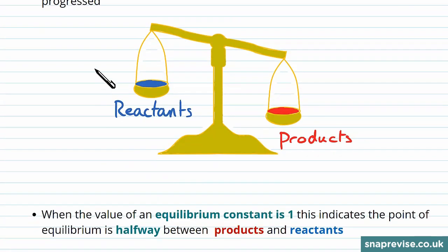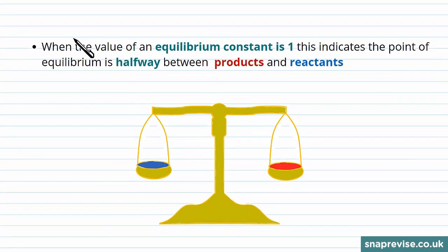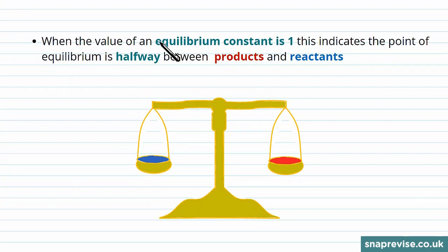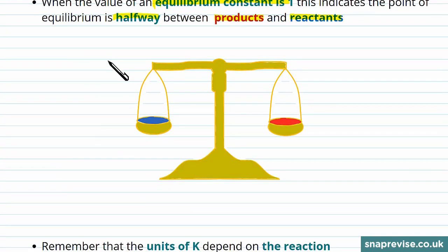If we had an equilibrium that had an even mix of products and reactants, then the equilibrium constant is 1. This shows that the equilibrium is halfway between the products and the reactants. So we can demonstrate that with our picture below by having our scales completely balanced between the products and the reactants.